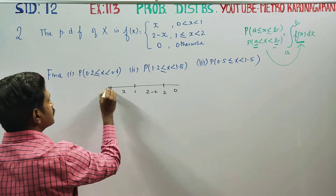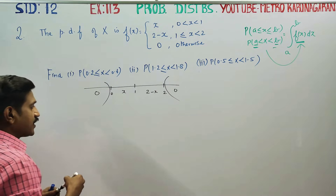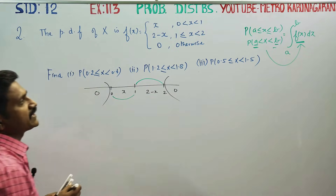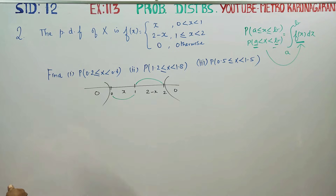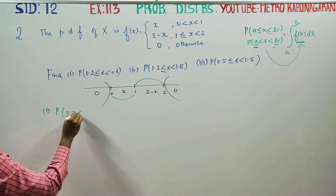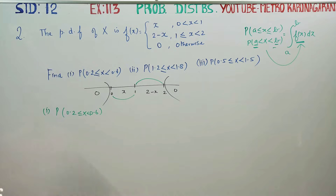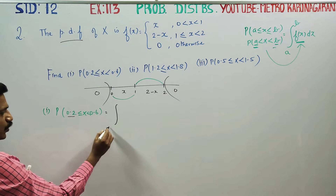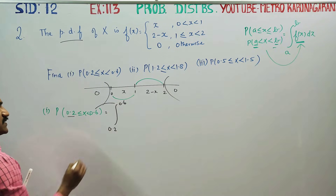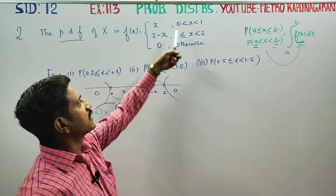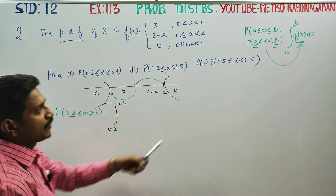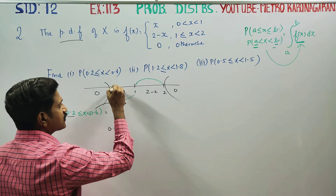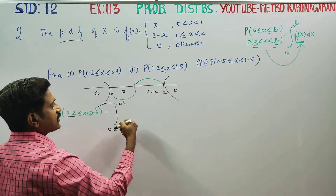The probability of 0.2 less than x less than 0.6. This is the probability. If you have a probability density function, you have to start with integration. This is the lower limit, 0.2, and this is the upper limit, 0.6. What interval is there? What function is there? This is the formula. You have to use the suitable function.